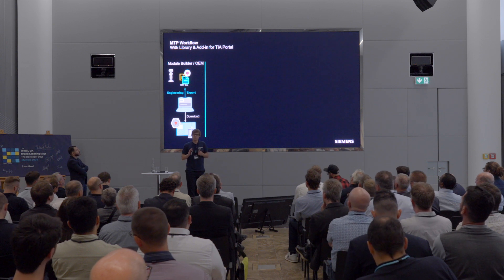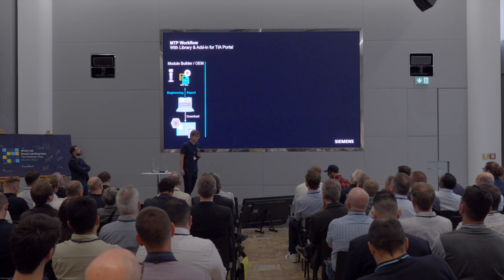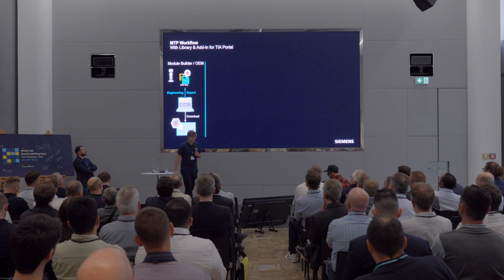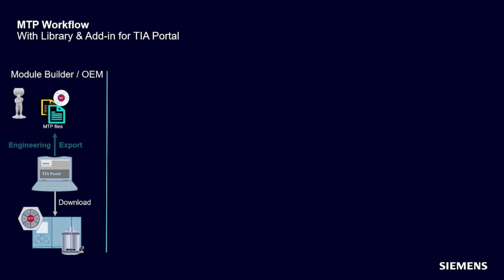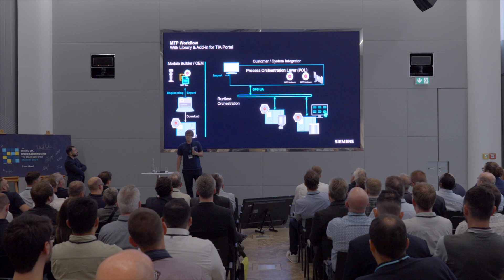Let's look at the stakeholders and workflow in the MTP context. On the left-hand side we have the machine builders or OEMs who build machines. In our use case they use the TIA Portal and our Simatic products for automation and local HMI. They program their machines using our libraries or their own solutions, do the testing, commissioning, and finish the machine. Then they are able to create an MTP file based on the engineering for the PLC and local HMI.